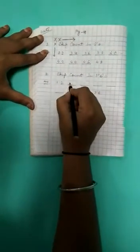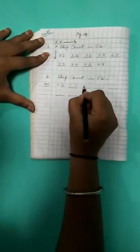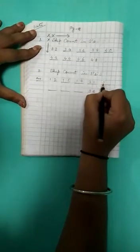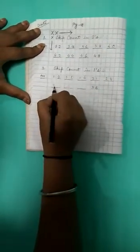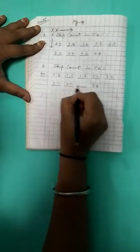Like this here skip counting 3s. Means here you have to jump 3, 3 numbers. So here you write 15, here 18, here 21, here 24, 27, 30, 33, 36. Okay?